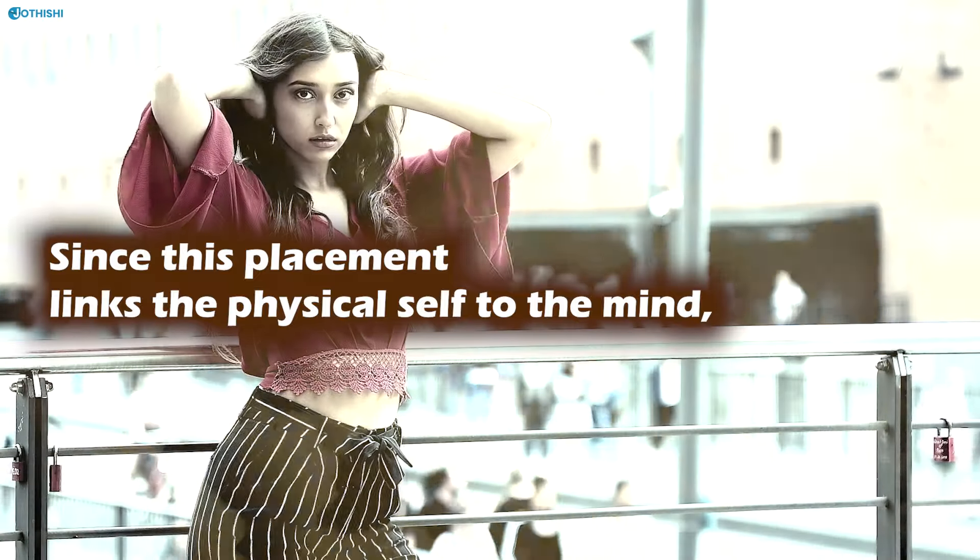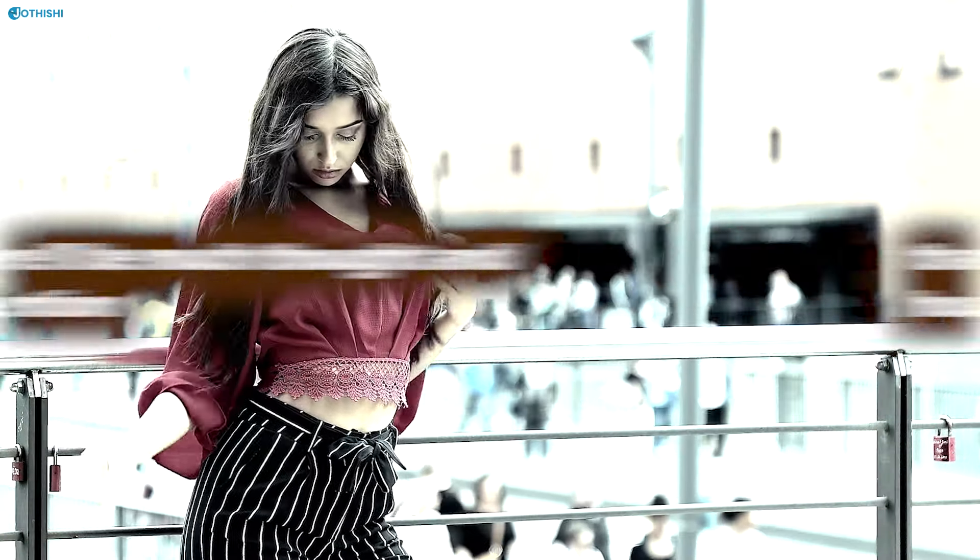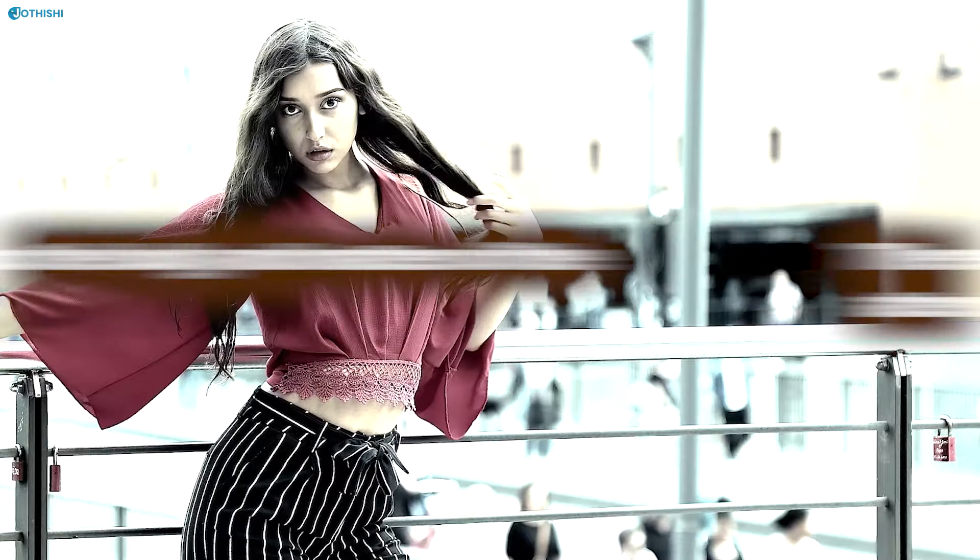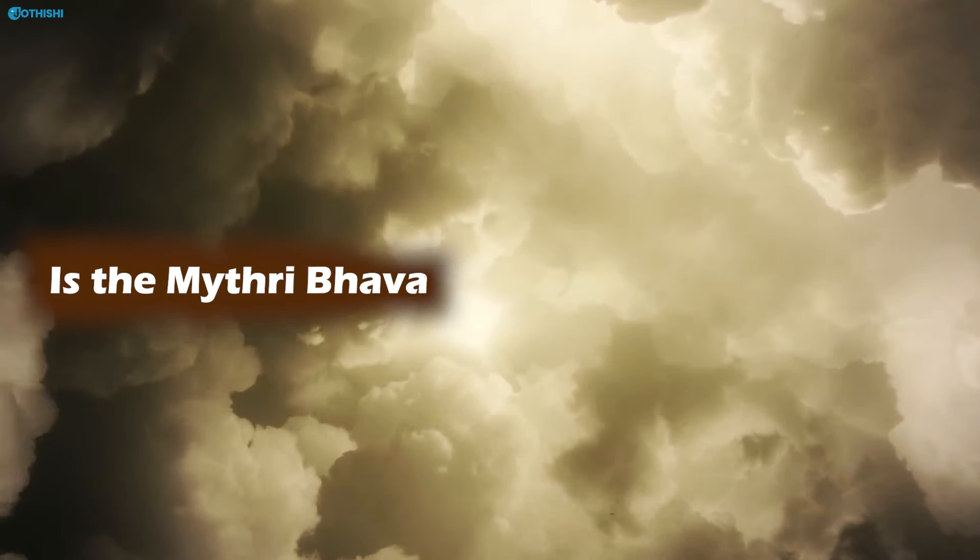Since this placement links the physical self to the mind, that is the first house to the fourth house, there will be much thought and attention paid to the body and matters of the body. The fourth house is the maitri bhava, it denotes the mother and mental peace and happiness of the person.